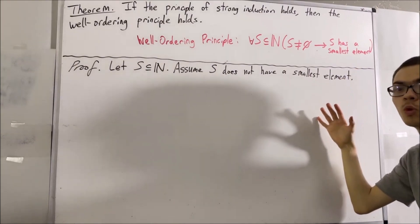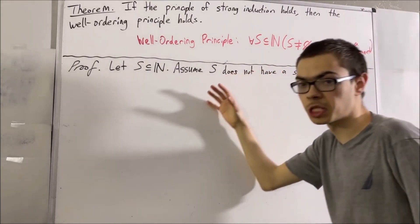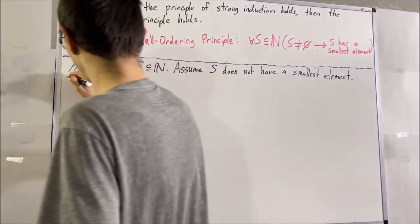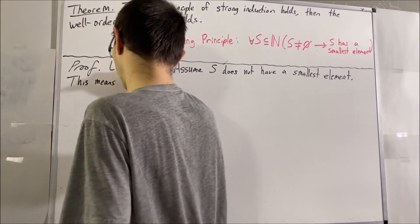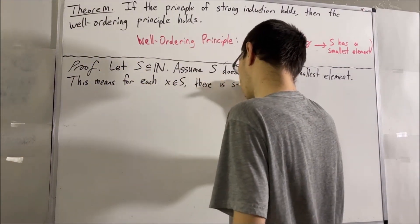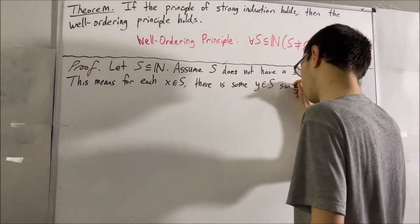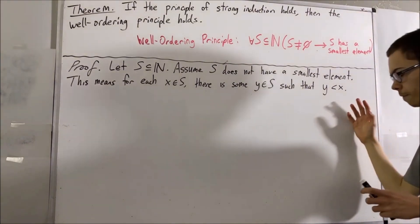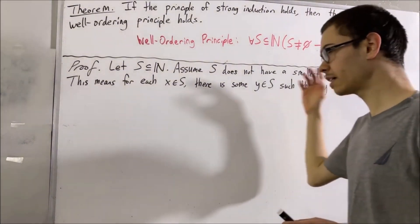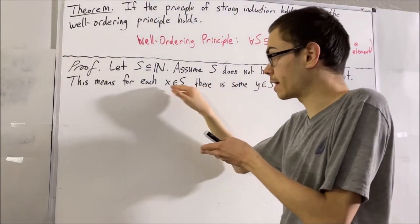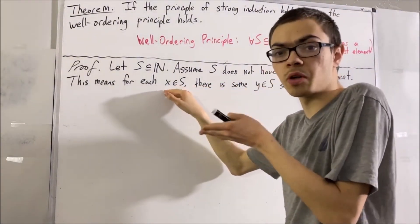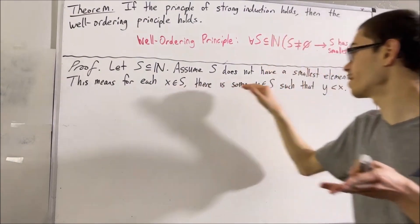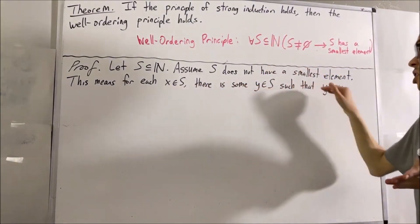This means for every element X in S, there is an element Y in S such that Y is less than X. In other words, if you consider any element of S and you think that element is the smallest element of S, you're wrong, because there is an element in S smaller than it.